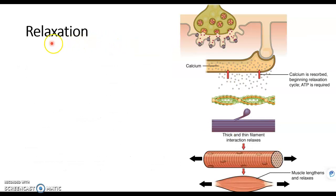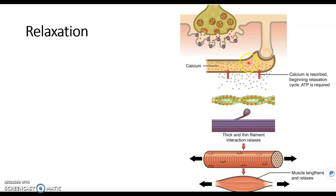So now the muscle is contracted — but how does it relax? Well, just as soon as calcium gets released to remove contact inhibition — meaning moving tropomyosin out of the way to cause the crossbridge and power stroke — it gets pumped back almost immediately. Calcium gets pumped back into its storage facility, the sarcoplasmic reticulum, or more specifically the terminal cisternae. When that happens, if there's no calcium, tropomyosin changes shape back to inhibit the contact.